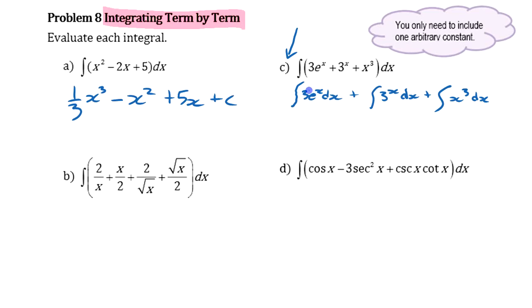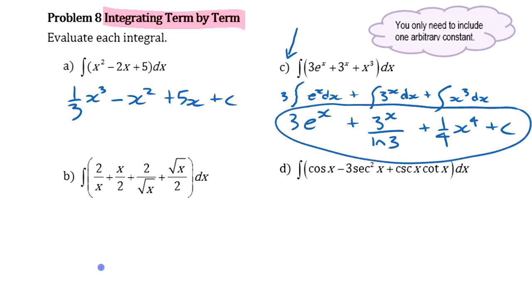The 3, I could actually grab this 3 and put that outside here. We can make it 3 times the integral of e to the x, which is just 3e to the x. And this one in the middle here, 3 to the x, that was 3 to the x divided by ln of 3. And this last one here is x to the fourth, one quarter, plus some constant there. It's going to have that extra term, that constant on the end.